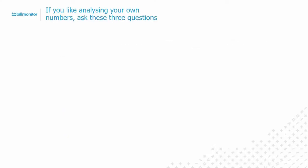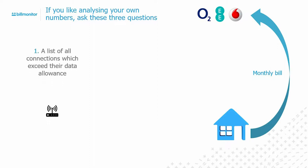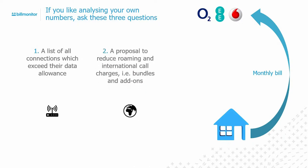Let's have a look at how the market works. We have networks, we have your business and you pay your monthly bills. If you ask your network three questions, we would suggest: ask for a list of all connections which exceed the data allowance; ask your account manager to make proposals in respect of all lines for international calls and excessive charges for roaming; and ask for a list of all the dormant lines you have in your organization.